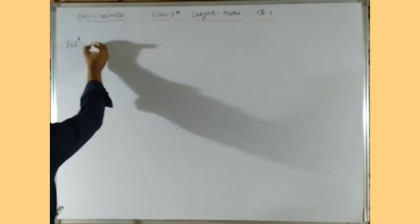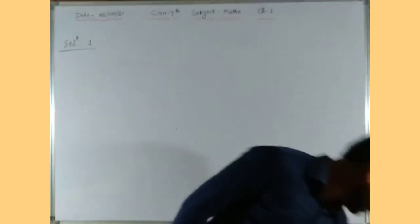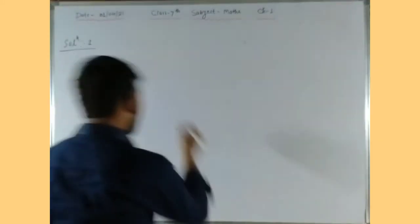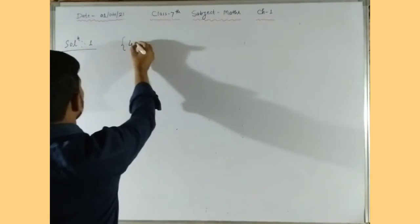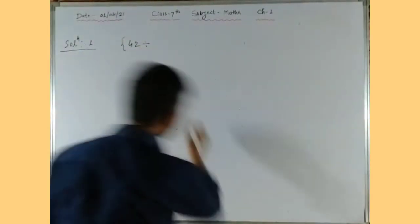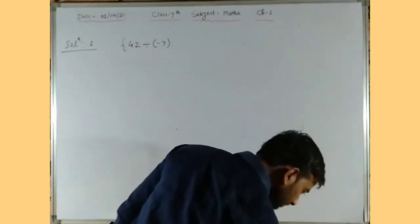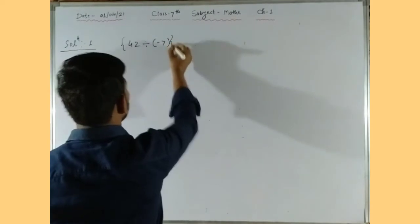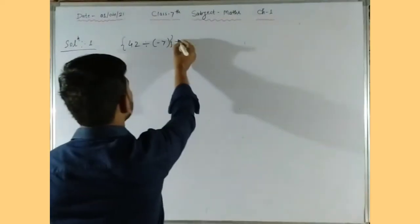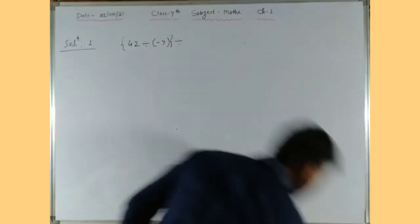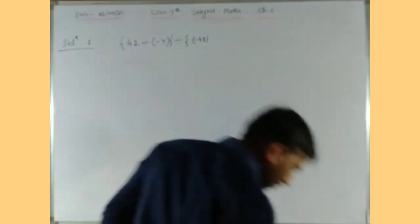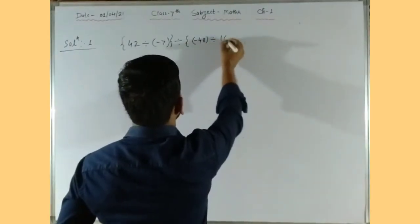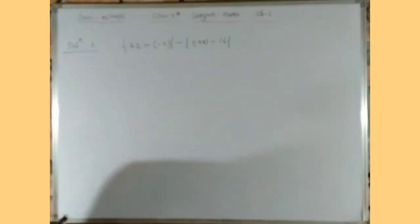Question number one: simplify 42 divided by, in bracket minus 7, curly bracket closed, divided by, in bracket minus 48 divided by 16, curly bracket closed.